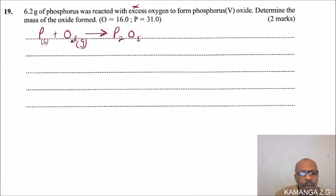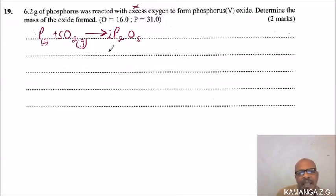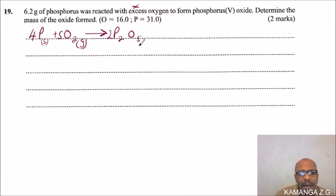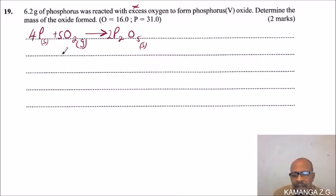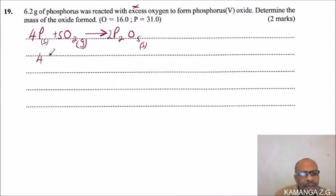On one side we have two oxygen atoms and on the other we have five, so we place a 2 in front of P₂O₅, giving us 10 oxygen atoms total, and a 5 in front of O₂. Now the phosphorus atoms have increased to four, so we put a 4 in front of phosphorus. That is now a balanced equation: 4P(s) + 5O₂(g) → 2P₂O₅.